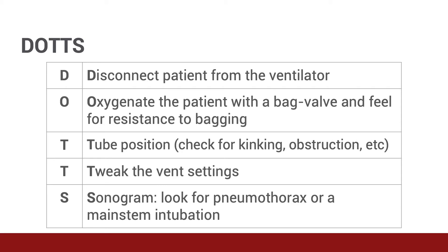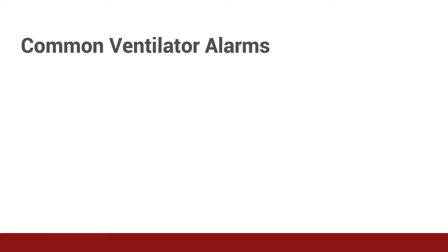DOTS is the checklist we use to organize our approach after going through the DOPS checklist. D is disconnect the patient from the ventilator, or oxygenate the patient with a bag valve and feel for resistance to bagging. O is oxygenate. T stands for tube position — check for kinking, obstruction, etc. T is tweak the vent settings. And S is sonogram — look for pneumothorax or main stem intubation.